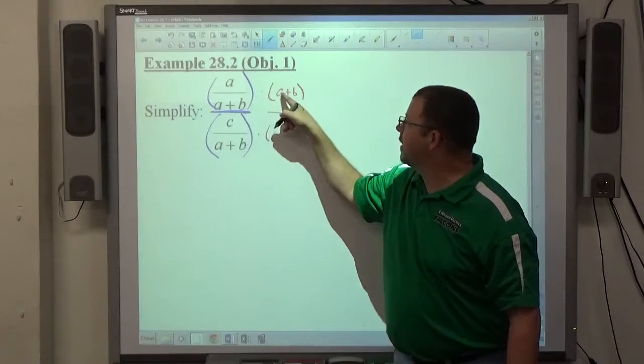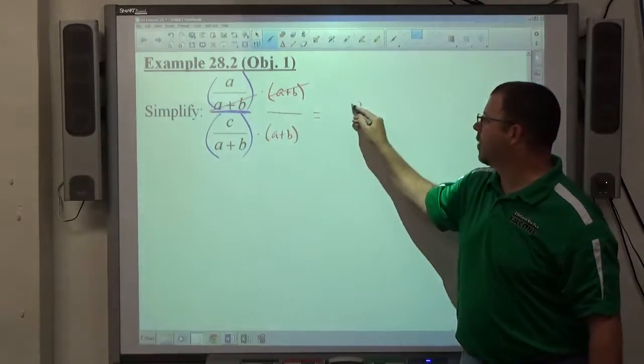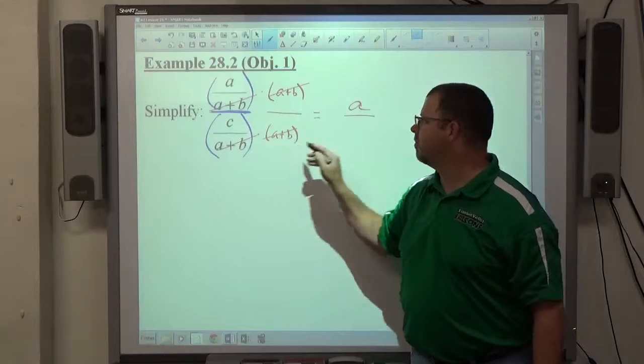When I do A over A plus B times A plus B, a top A plus B and a bottom A plus B cancel, leaving me with A. A top A plus B and a bottom A plus B cancel, leaving me with C.